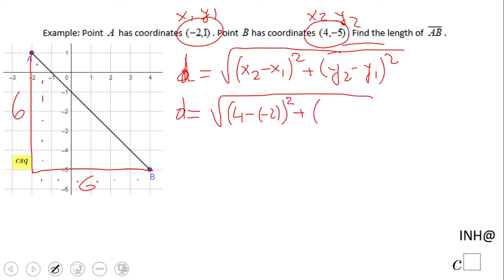We end up with something very interesting: 6 squared, right? 4 minus negative 2 is 6, and you notice this is 6. The other one is also 6.